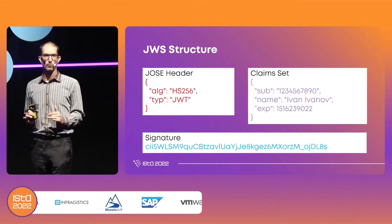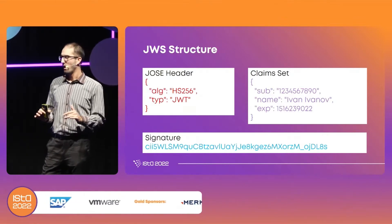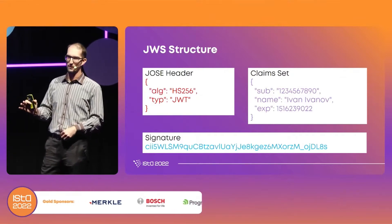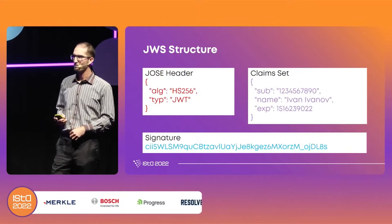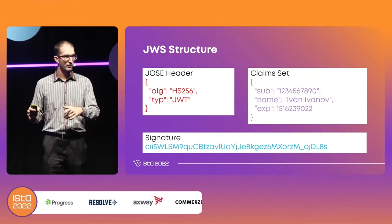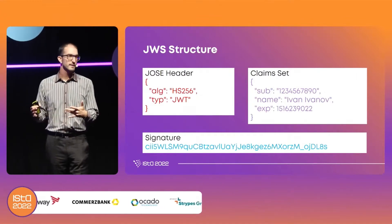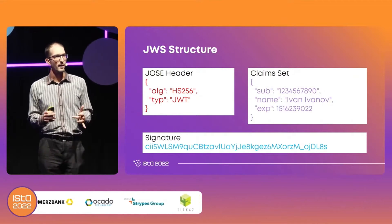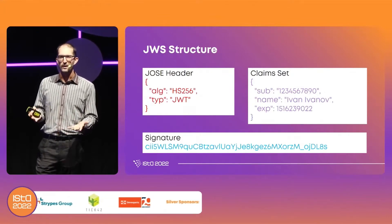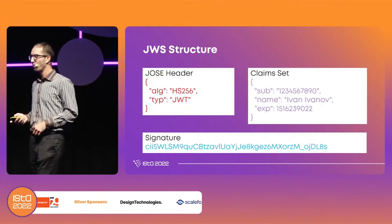Let's look at the JWS structure. It consists of three parts. The JOSE header contains information about the cryptographic algorithm used — in this case HMAC with SHA-256 — and the type of the token, which is JWT. The second object is the claims — this is the user information that lives in the token, not on the server. We have 'sub' for subject, 'exp' for expiry, and 'iss' for issuer — not the International Space Station.